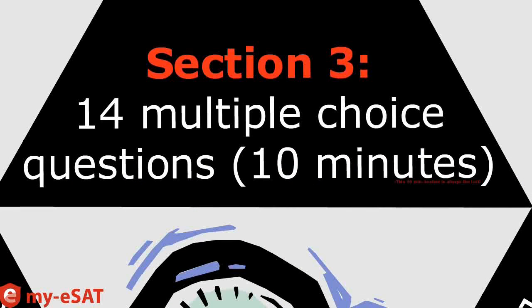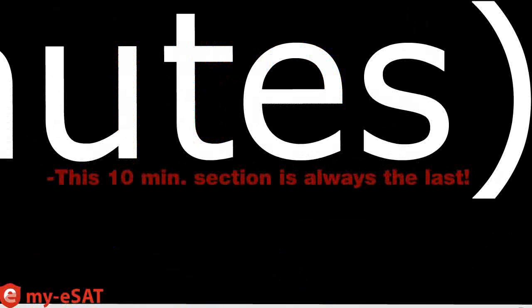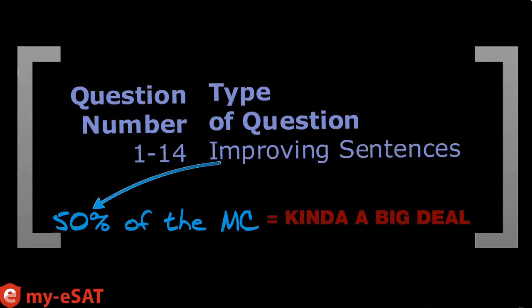Section 3 is our last and shortest section. It's only 10 minutes long and it consists of 14 questions. It's always going to be the last section of the SAT, so you kind of start and end your SAT experience with the writing section. All 14 questions in Section 3 will be improving sentence questions. That means there are 25 improving sentence questions in total, making this question type about 50% of the multiple choice section — and most people think 50% is a big deal. So let's definitely get familiar with this question type.